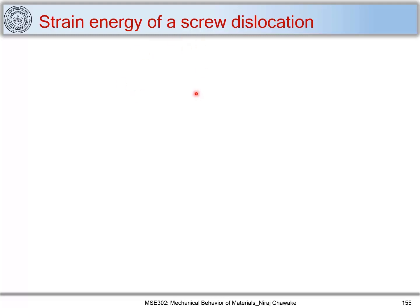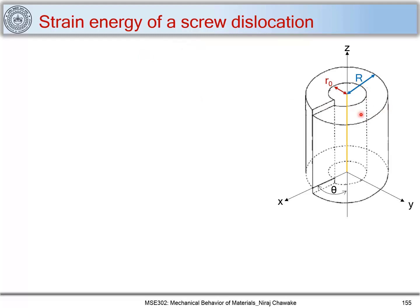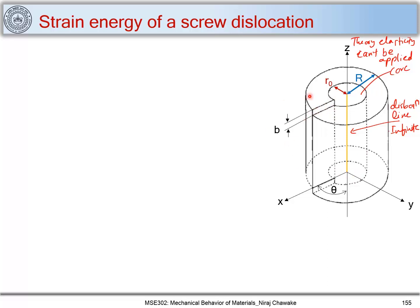Let's consider a case of a screw dislocation. We have a screw dislocation here — we have seen this figure already and we have marked our coordinate axes x, y, z in this way. Here r-naught is the radius of the core region, where the theory of elasticity cannot be applied. You can also see a dislocation line marked in yellow, which is infinite. This is our Burgers vector, which is parallel to the dislocation line, and thus this dislocation is a screw dislocation.